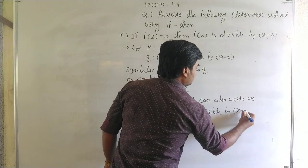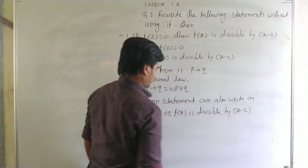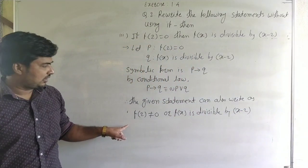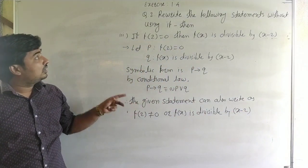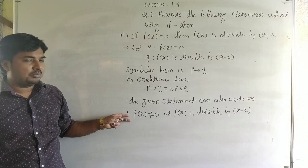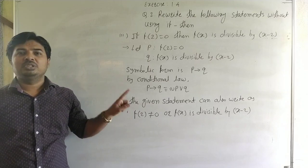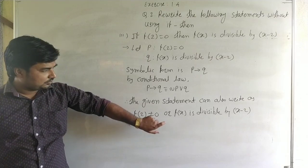So f(2) is not equal to 0, or f(x) is divisible by x minus 2. This is how we rewrite the statement without using if-then — we express the implication as a disjunction using the conditional law.